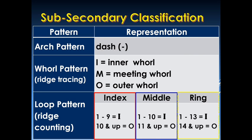And last is the ring finger. For the ring finger, if it contains a ridge count of 1 to 13, we are going to put letter I as sub-secondary classification. And for 14 ridges and up, we are going to put letter O, which stands for outer.